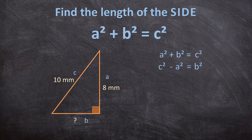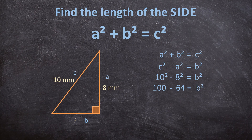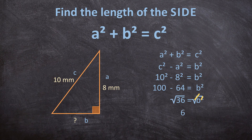Filling in the values: C is 10, so 10² minus A is 8, so 8², equals B². 10² is 100 minus 8² is 64, equals B². 100 minus 64 is 36, equals B². We don't want B² — we want B — so we take the square root of B² to cancel the square, and the square root of 36 is 6, so B equals 6.